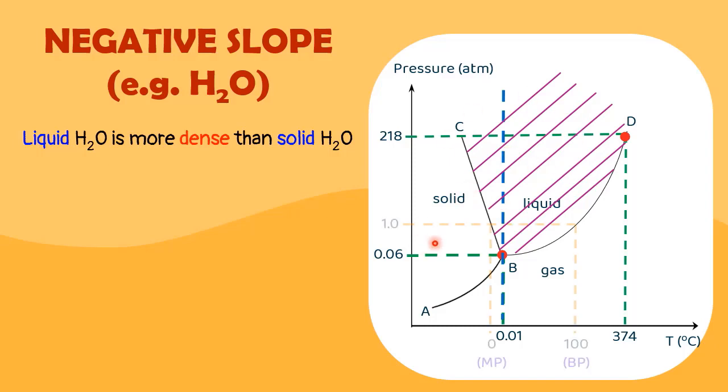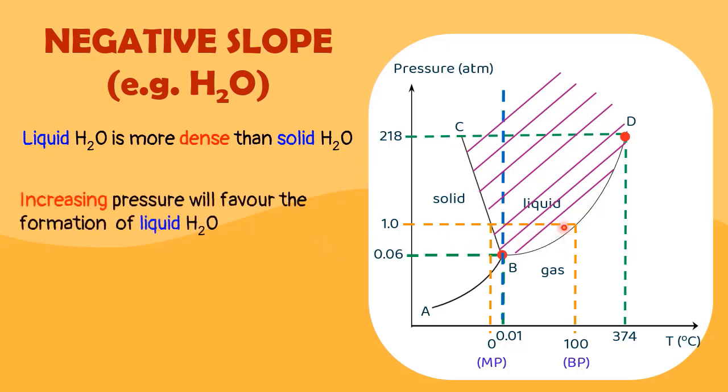What happens if we increase the pressure to exactly 1 atm and then we draw a horizontal line across the phase diagram? Increasing the pressure will favor the formation of liquid obviously because the area on the graph for liquid is much bigger than the solid.